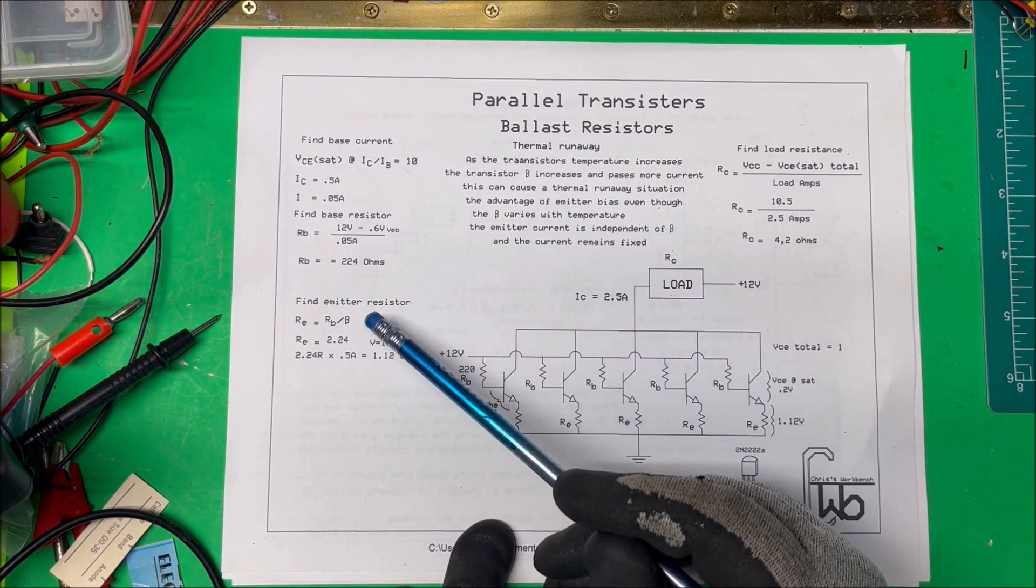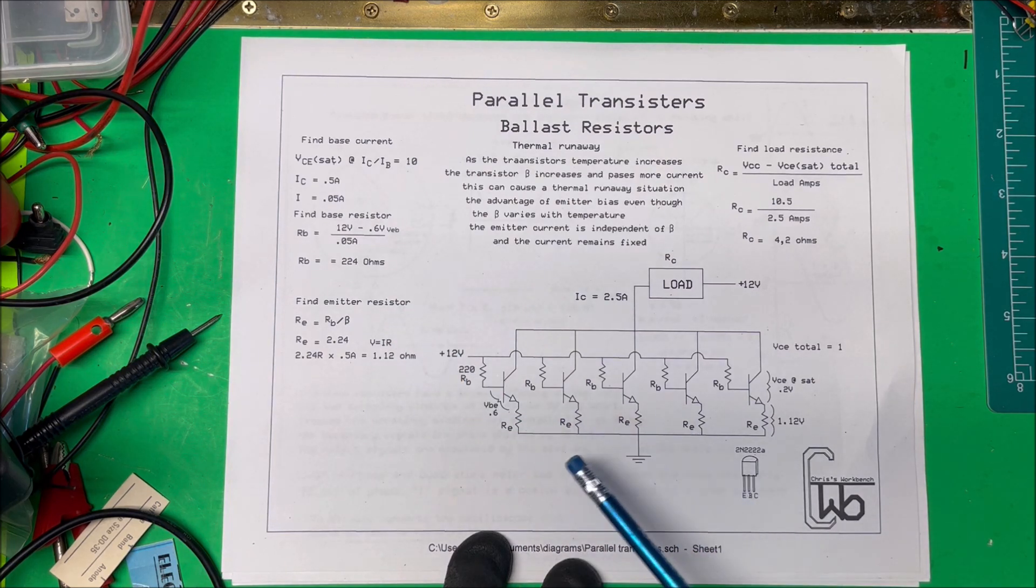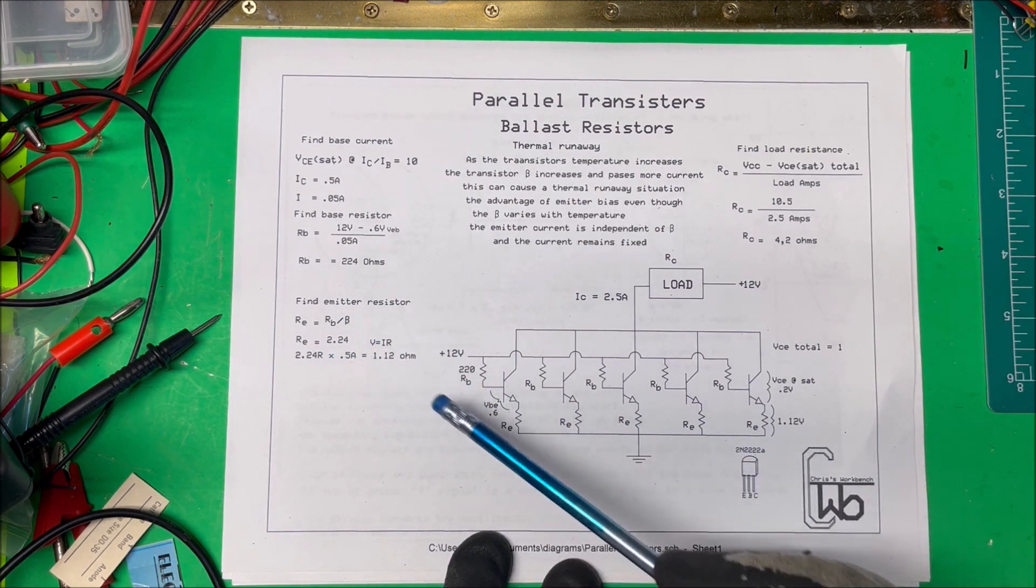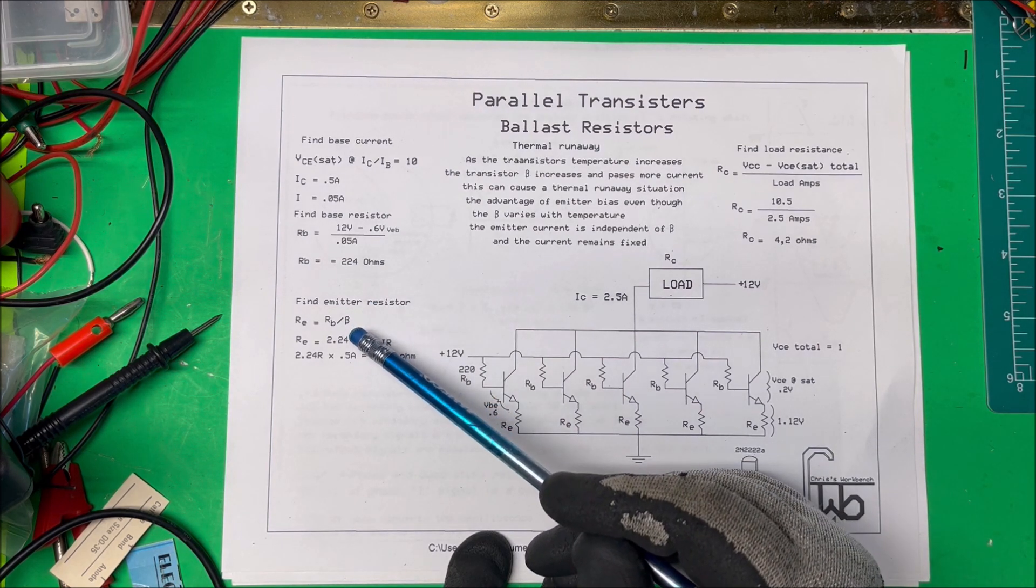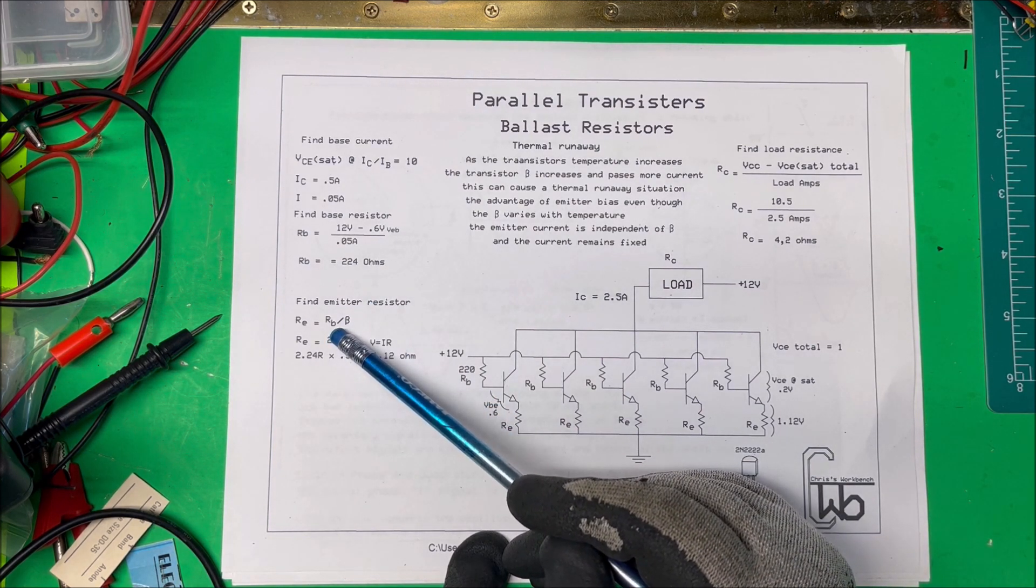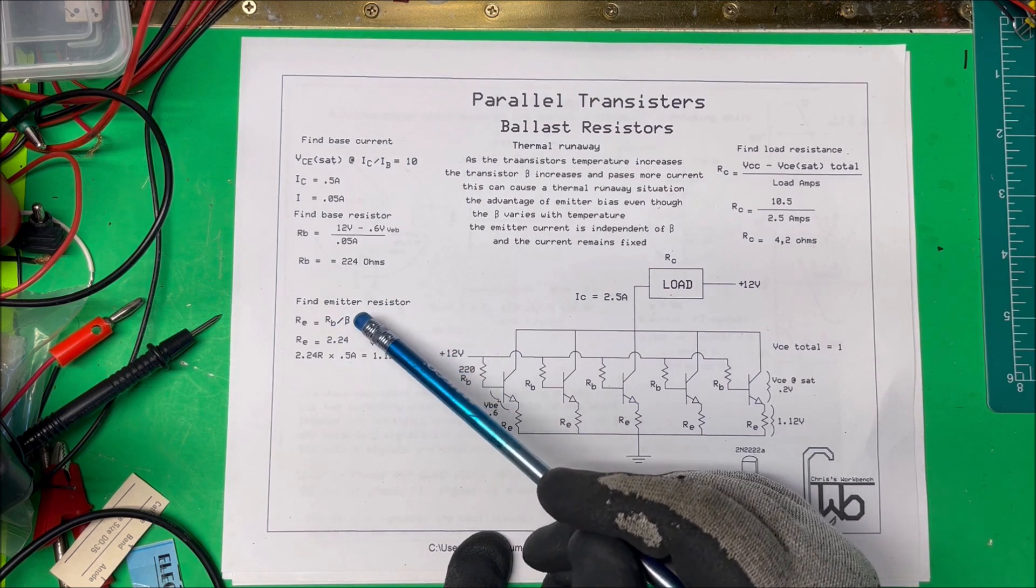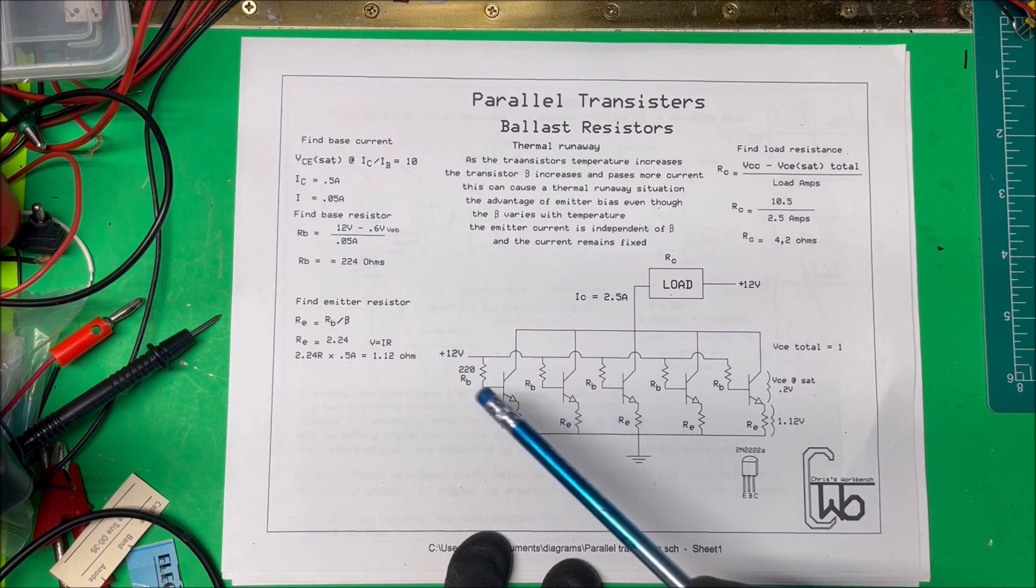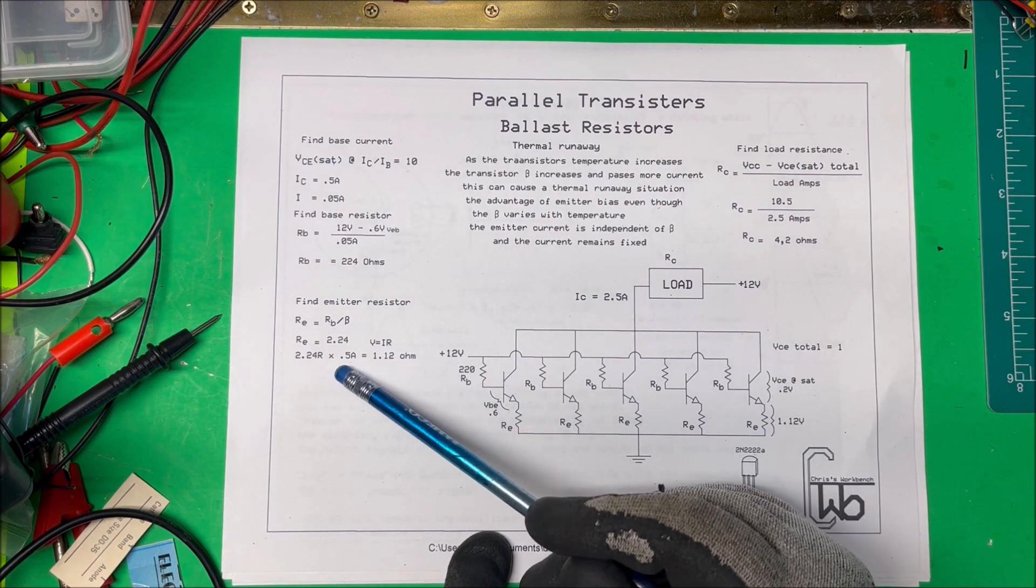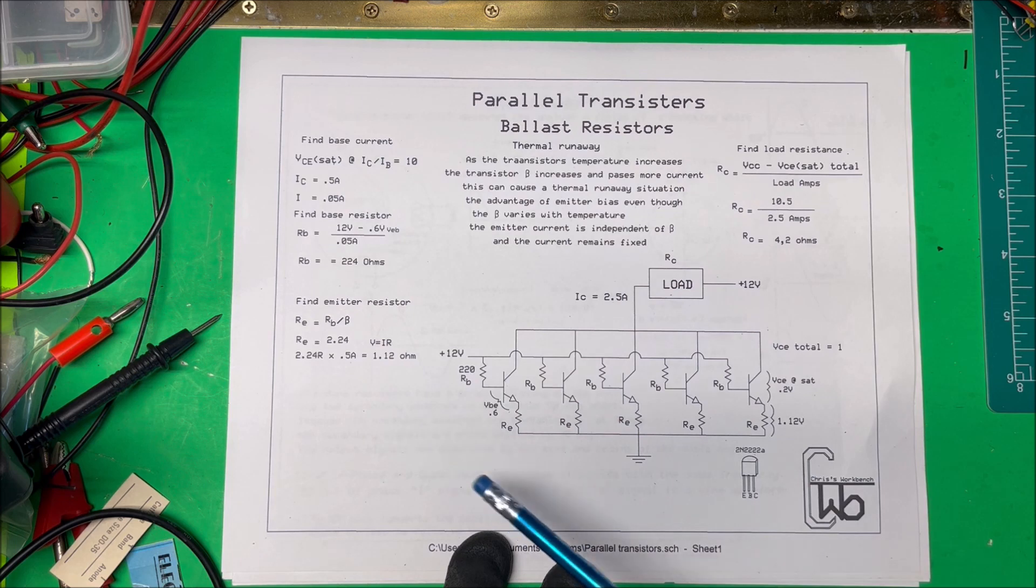Now to find the emitter resistor, there's a lot of math that goes into finding that, but I'm going to cheat here and I'm just going to take the base resistor and divide it by beta. So beta on these is about 100, so I'm going to divide that out and that gets me down to 1 ohm.